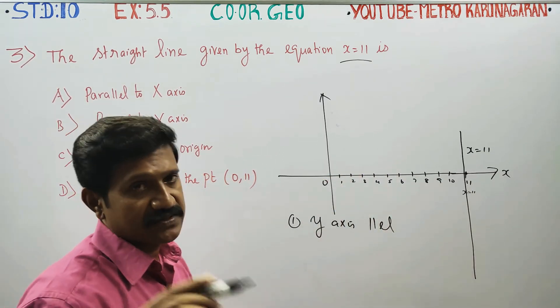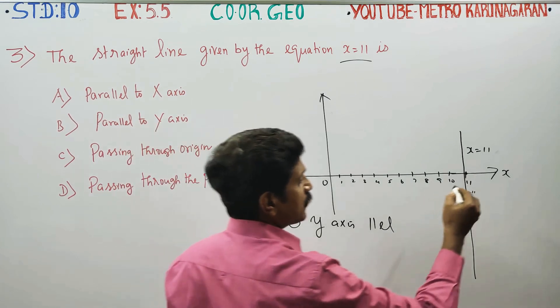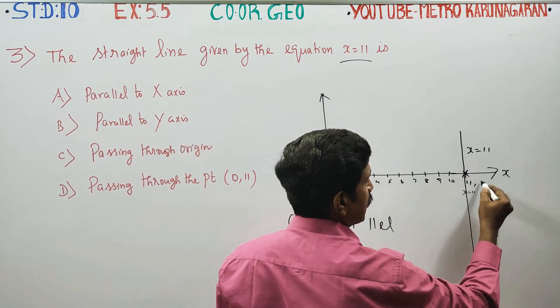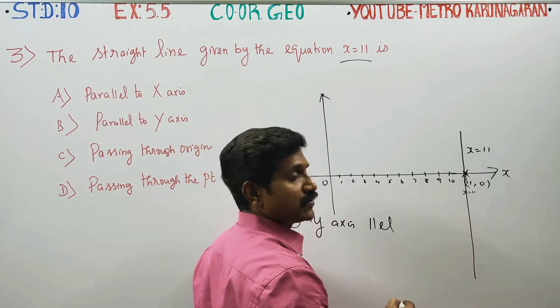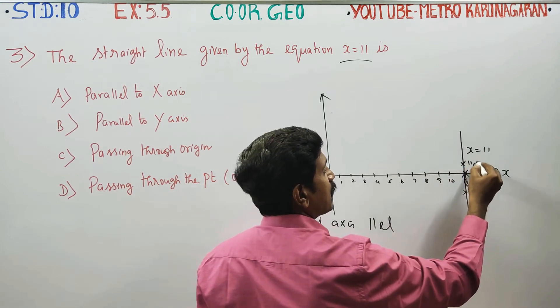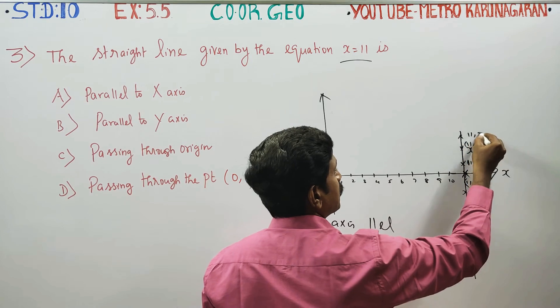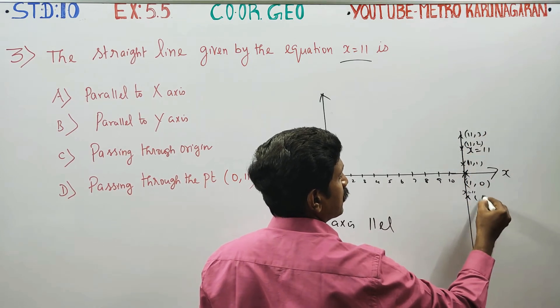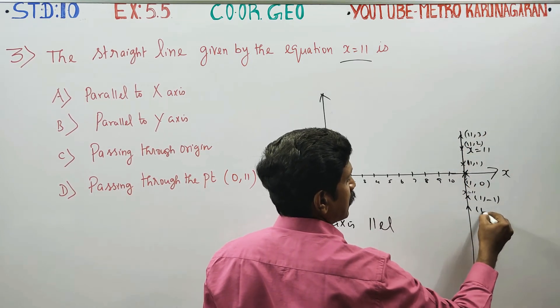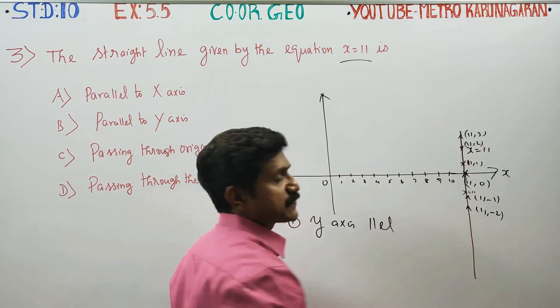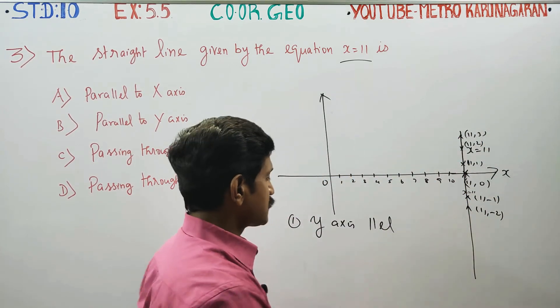Second information. If you want to pass, 11,0, 11,1, 11,2, 11,3, 11,-1, 11,-2, it passes through.